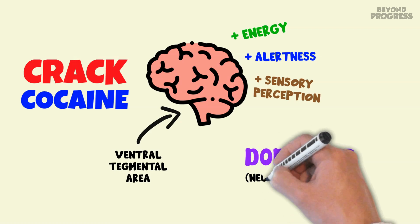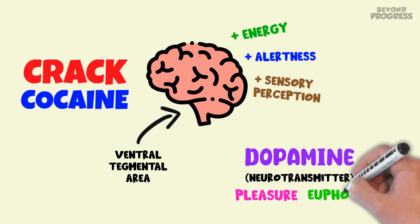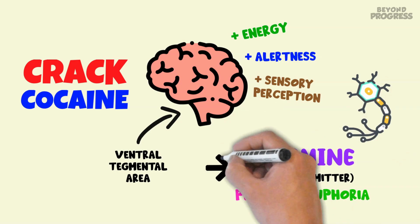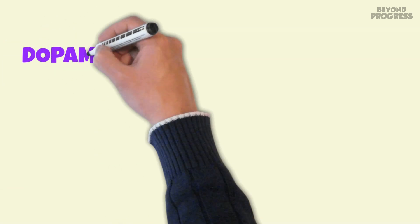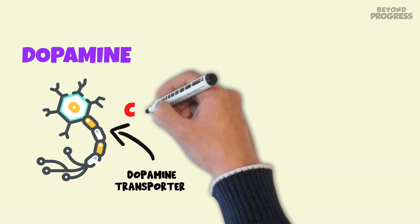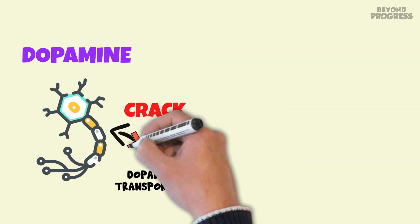Dopamine moves between neurons and binds to receptors that generate pleasurable sensations. Typically, dopamine is reabsorbed by the neuron via a dopamine transporter. Crack interferes with this process by blocking the transporter, causing dopamine to accumulate.